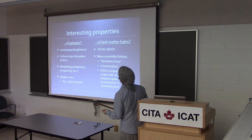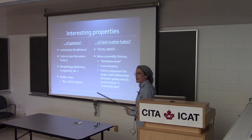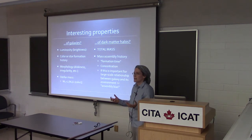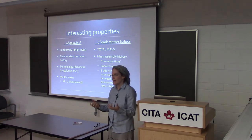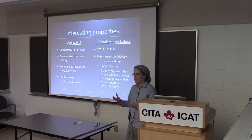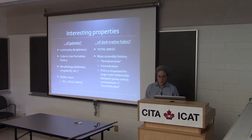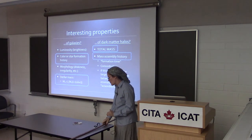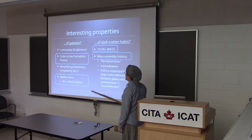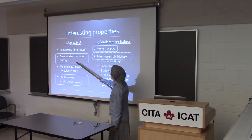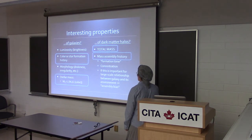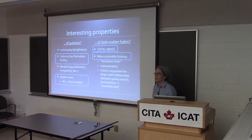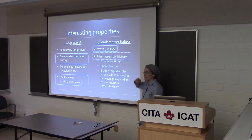We can ask more interesting questions like: how much does the mass assembly history of the dark matter halo matter? If you have galaxies in dark matter halos with the same mass, but that mass is assembled in a very different way — this halo formed earlier than that halo — does that have a measurable impact on the observed properties of the galaxy? In the first part of the talk, I'll discuss observations about the relationship between stellar masses, colors, and total dark matter halo mass. In the second part, I'll discuss constraints on the importance of the mass assembly history.